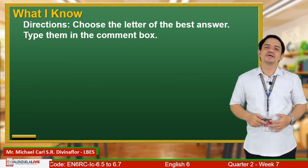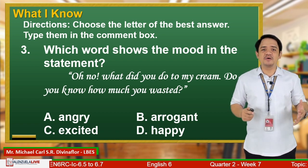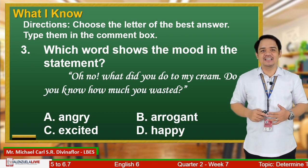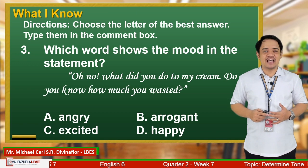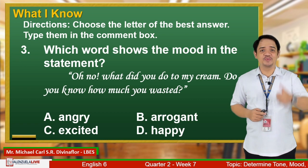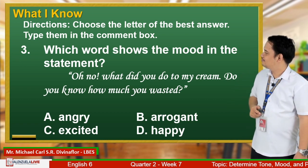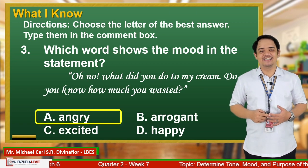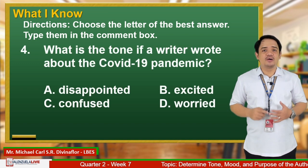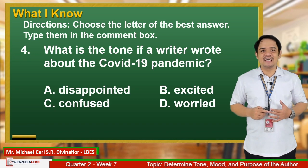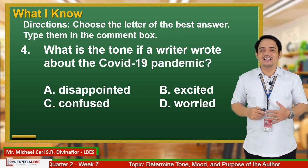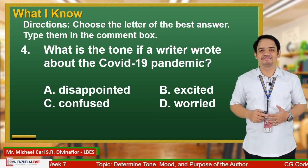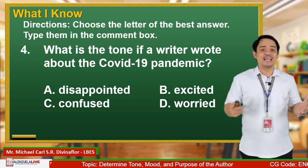Number 3: Which word shows the mood in the statement — 'Oh no! What did you do to my cream? Do you know how much you wasted?' Is it A. Angry? B. Arrogant? C. Excitement? D. Happy? The correct answer is letter A — angry. For number 4, what is the tone of a writer who wrote about the COVID-19 pandemic? Is it A. Disappointed? B. Excited? C. Confused? D. Worried? The correct answer is letter D — worried.